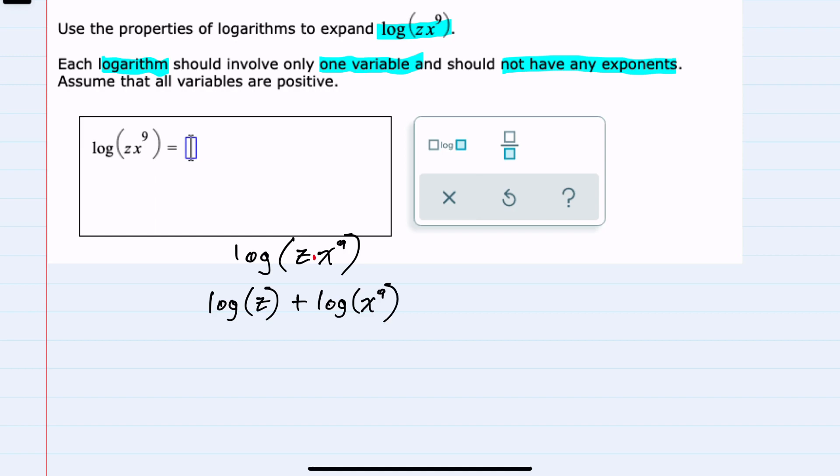So log z plus log x to the 9th. Log z is simplified as much as possible. But for the second part, whenever we take the log of a variable raised to an exponent, that exponent can come down in front as a coefficient. So this would be 9 times the log of x.